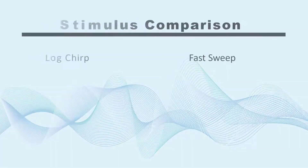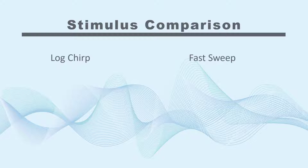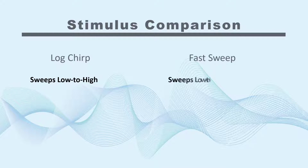The fast sweep is almost as fast as a logchirp, but without the logchirp limitations. Where a logchirp can only be swept low to high, a fast sweep stimulus can be swept in either direction — low to high or high to low.